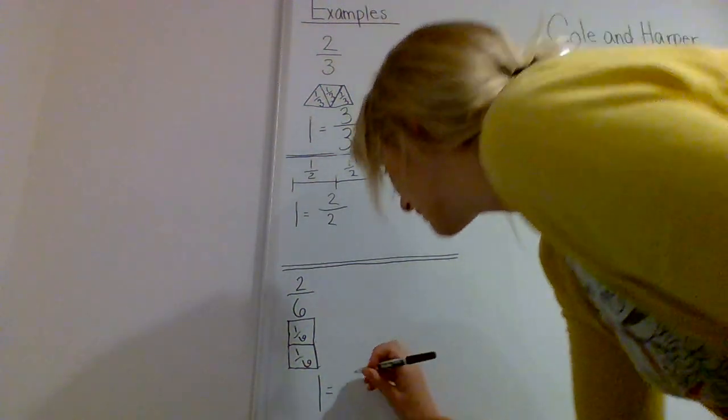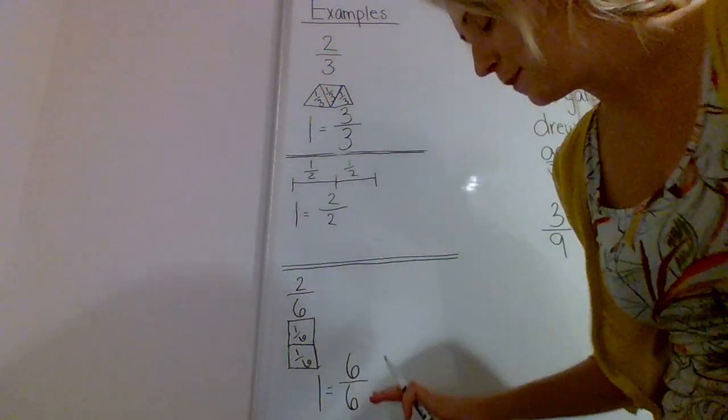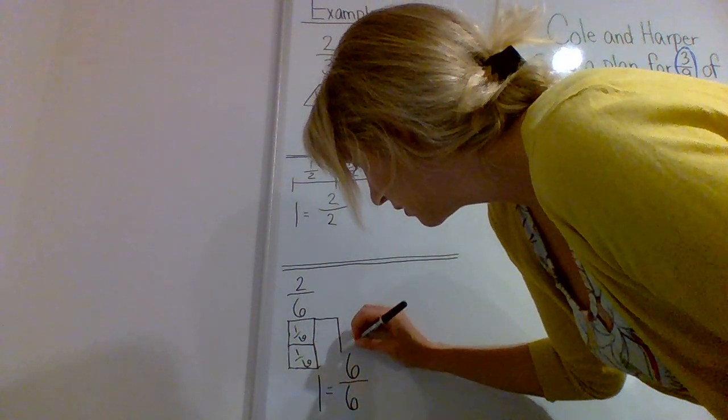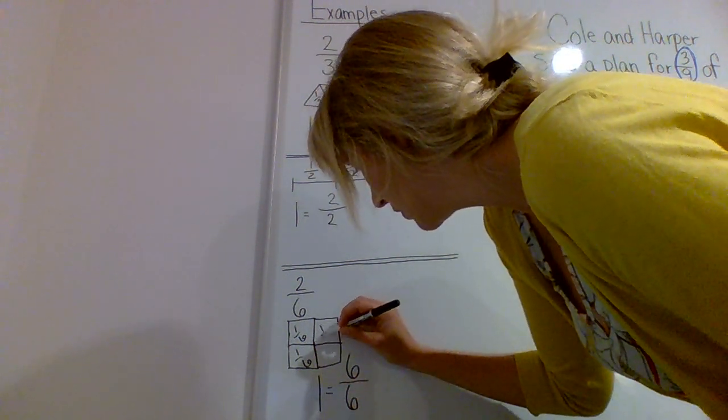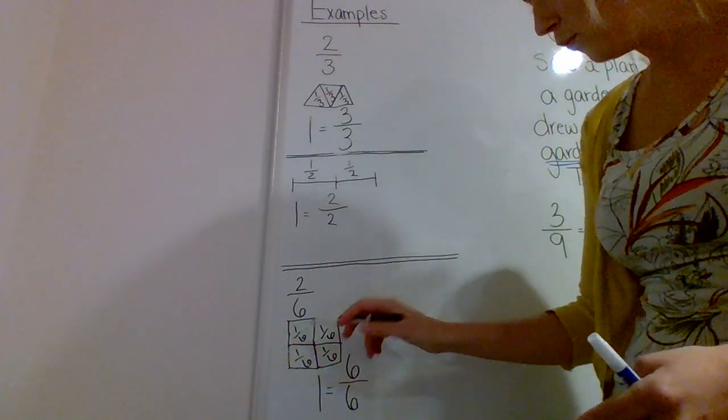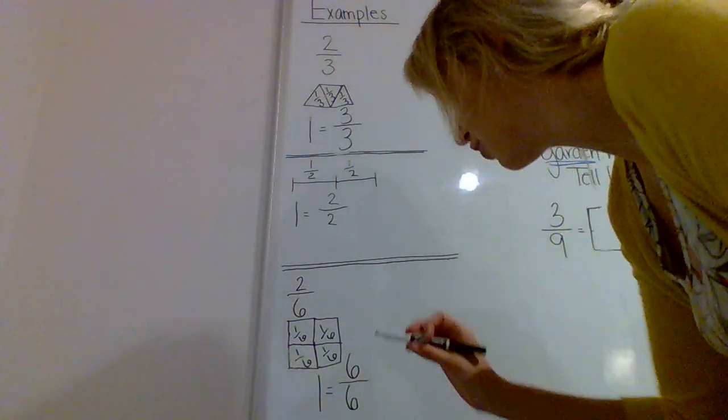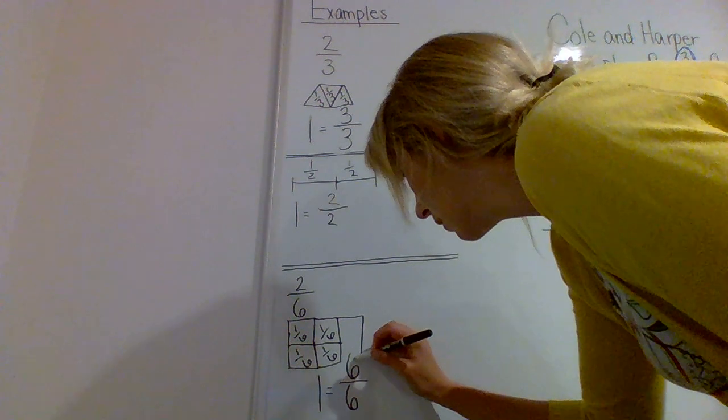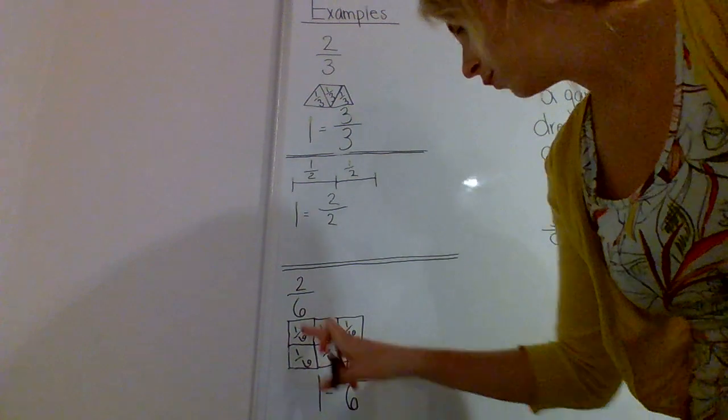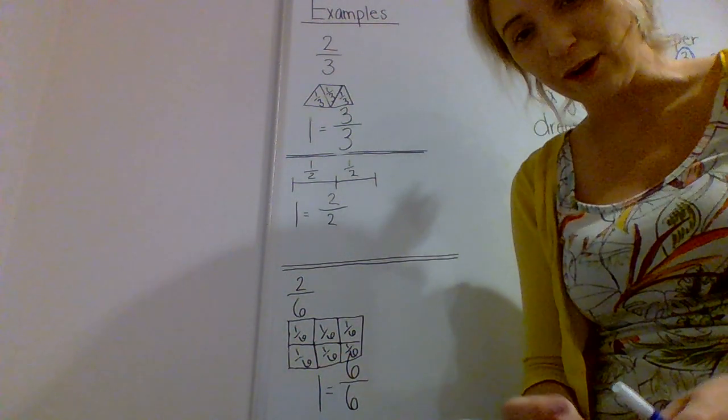Well, remember the one whole. Look at the denominator. I need to have six parts, and all six parts need to be there. Well, right now I only have two out of the six. So I need to draw some more parts. Let's see: one-sixth, one-sixth. Am I done? One, two, three, four. Not done yet. I need to make sure I have six parts. One-sixth, one-sixth. One, two, three, four, five, six. Now I have my six parts.